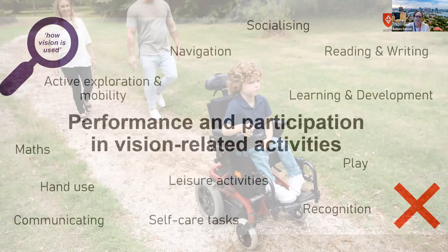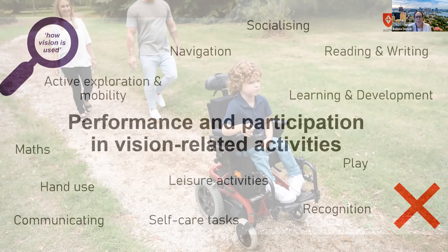ME-VIEW also does not focus on a child's level of functioning in vision-related activities. Children may be described as having good visual ability because of their success in using eye gaze technology to communicate, or as having limitations because of difficulties with reading or not having enough vision to use powered mobility. Whilst these activities and levels of participation are important, assessment of functioning is complicated by many factors including vision, cognition, motor functions, and aspects of the environment, making it hard to know what is actually being measured.